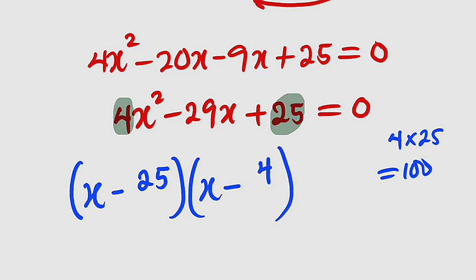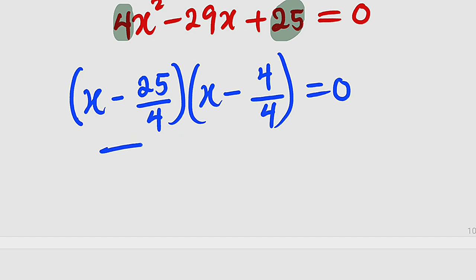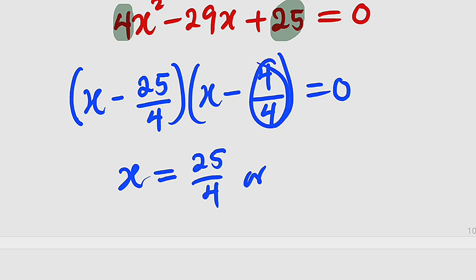But remember, the leading coefficient is not 1. So you follow and divide all of them by that leading coefficient. Divide by 4, divide by 4. Set them to be equal to 0. Now it implies either this factor or this factor equal to 0. So the first one, x must be equal to positive 25 divided by 4. Or the second one, 4 divided by 4 is 1, so we have x minus 1, which implies x equal to positive 1.